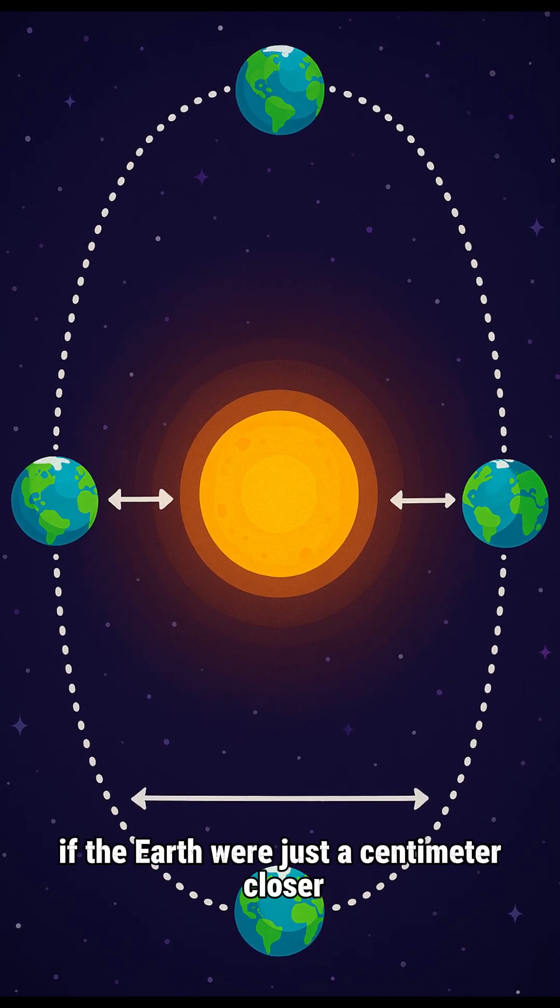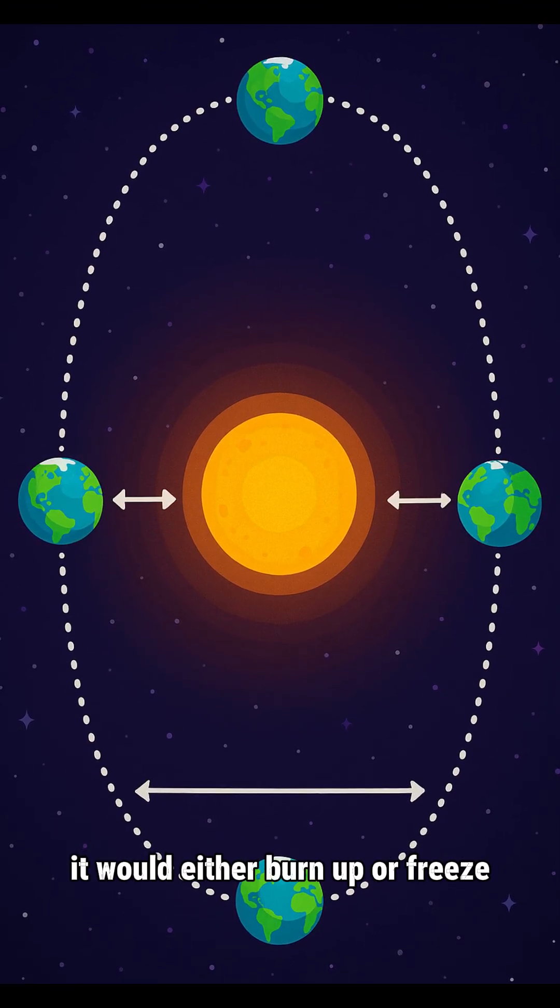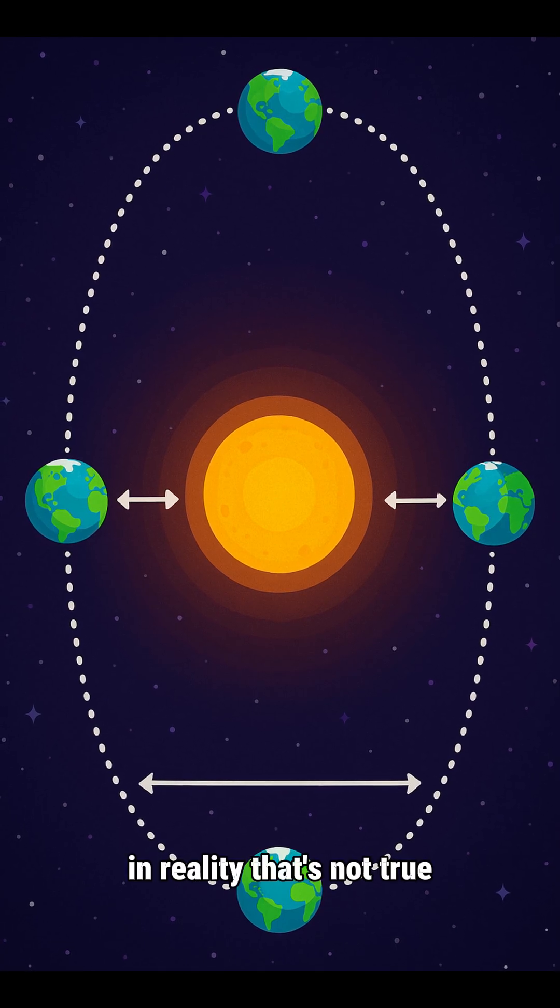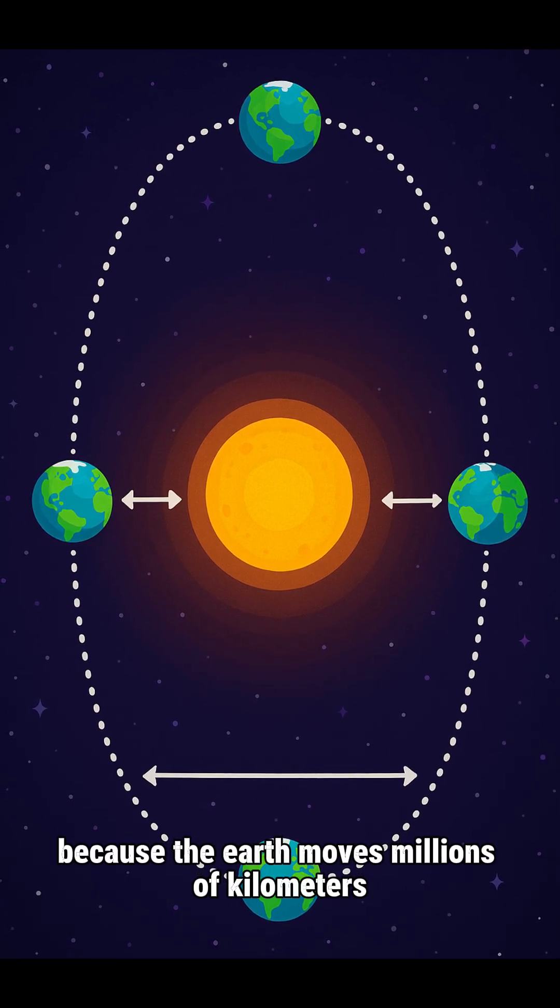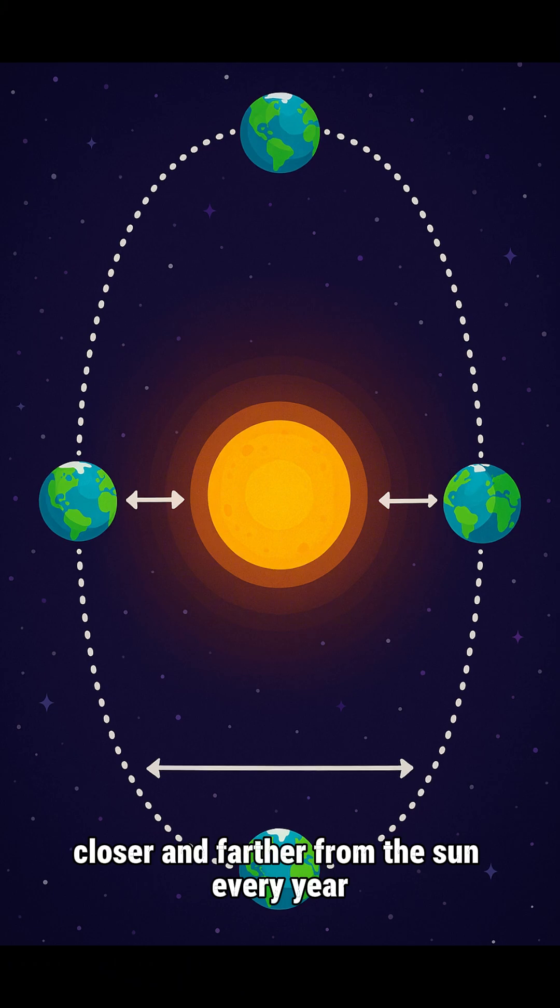You've probably heard that if the Earth were just a centimeter closer or farther from the Sun, it would either burn up or freeze. In reality, that's not true because the Earth moves millions of kilometers closer and farther from the Sun every year, and yet life continues.